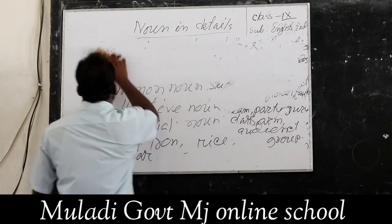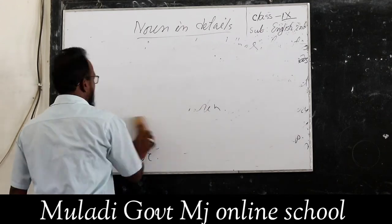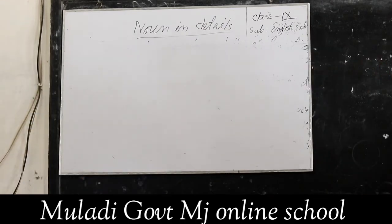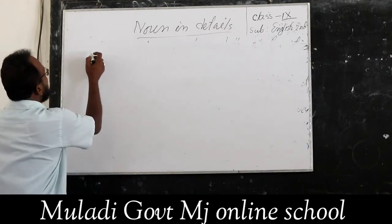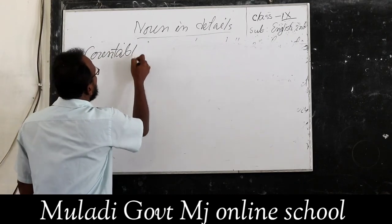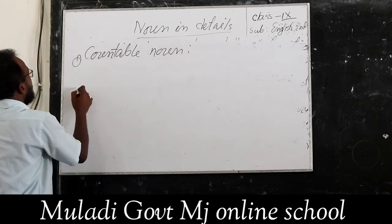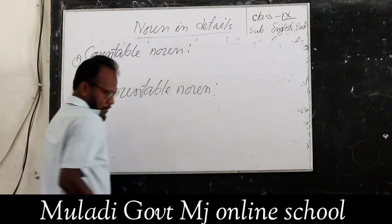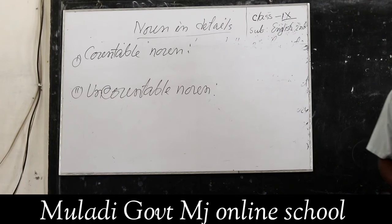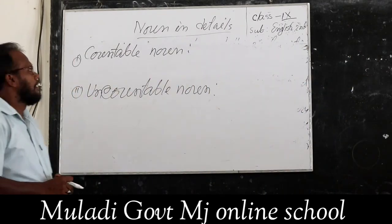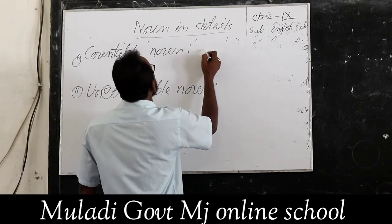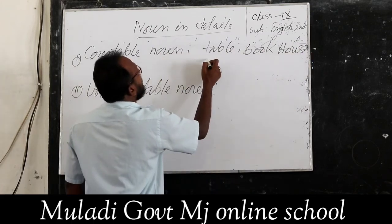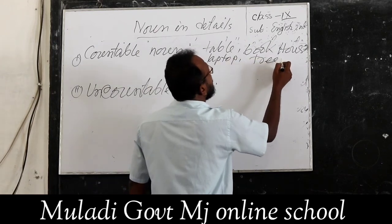Now let us know other classifications of noun. Noun may again be divided on the basis of calculation. Noun is of two types: countable noun and uncountable noun. Countable noun is a noun that can be counted, such as table, book, house, laptop, etc.